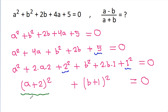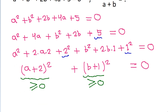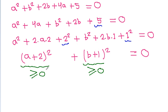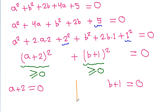Now, (a plus 2) whole squared is always greater than or equal to 0, and (b plus 1) whole squared is also greater than or equal to 0. Since the sum of these two terms equals 0, the only possible case is a plus 2 equals 0 and b plus 1 equals 0. From here, a equals minus 2 and b equals minus 1.